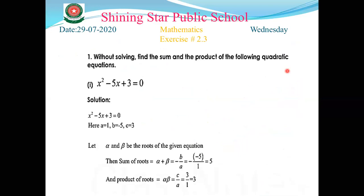Part number one: x² - 5x + 3 = 0. If we compare x² - 5x + 3 with the standard form of the quadratic equation, we get a = 1, b = -5, and c = 3.